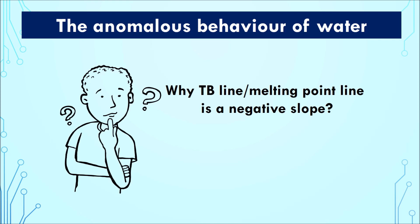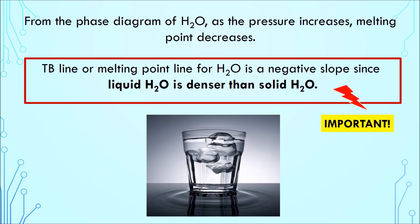Why does the TB line slope to the left? This is known as the anomalous behavior of water. What happens?